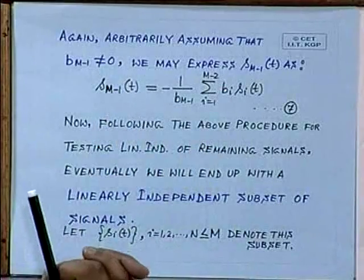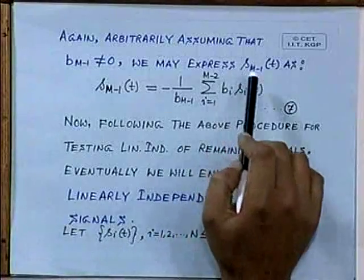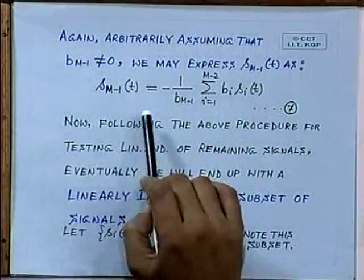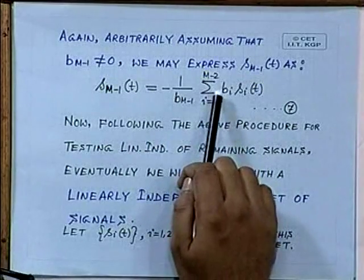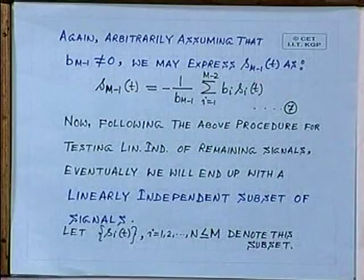So again we arbitrarily assume that B_{m-1} is not equal to 0. This assumption is valid here because we are trying to establish a point, but it is not necessary that B_{m-1} has to be 0. As if for convenience, we have sorted the signals such that incidentally B_{m-1} is not equal to 0. In general, any other coefficient may be non-zero, at least one of them must be non-zero. So we may express S_{m-1}(t) as minus 1 upon B_{m-1} summation of B_i S_i(t), where i will vary from 1 to m minus 2. That is equation number 7.